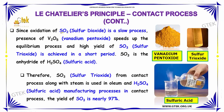Since oxidation of sulfur dioxide is a slow process, the presence of vanadium pentoxide speeds up the equilibrium process, and a high yield of sulfur trioxide is achieved in a very short period.